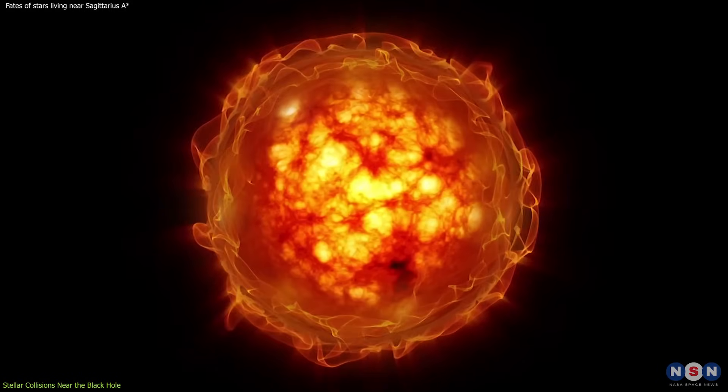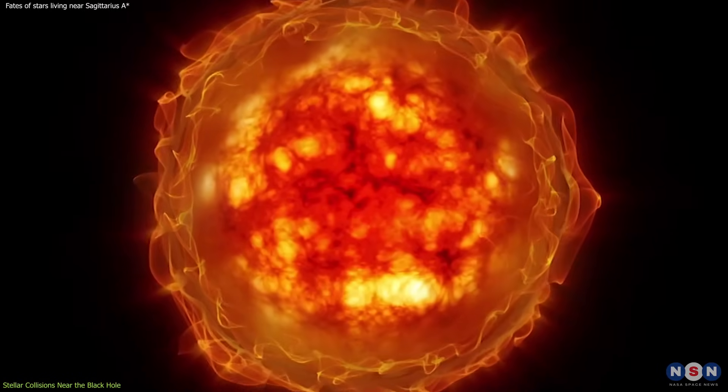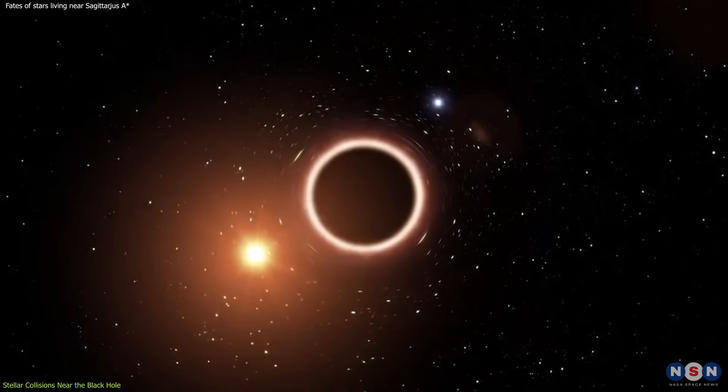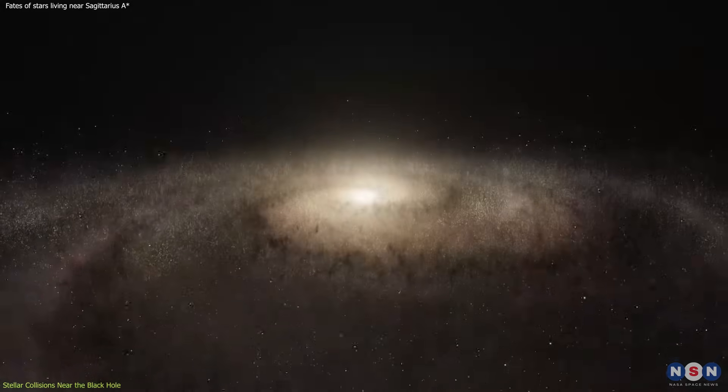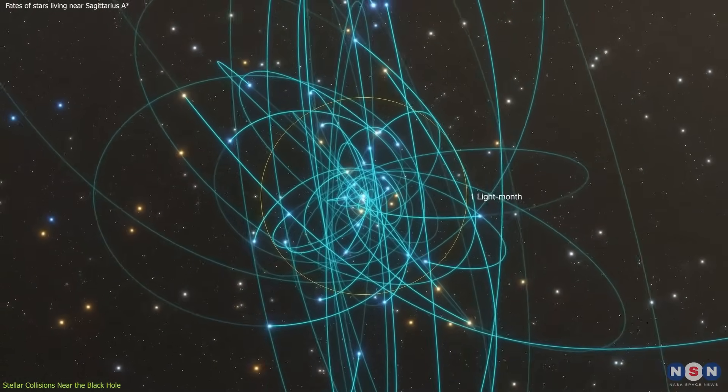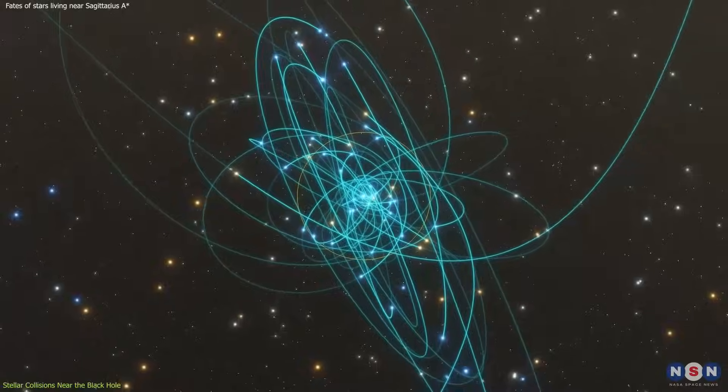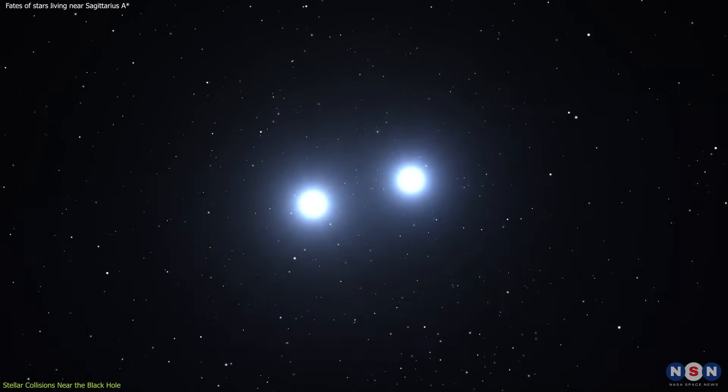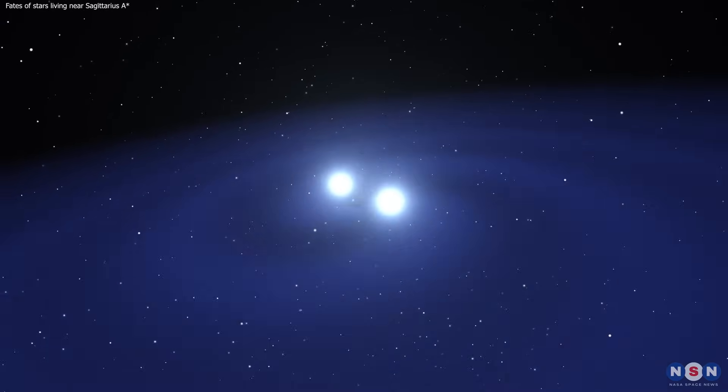These stars are like cosmic chameleons, masking their true age and origin with a youthful facade. This environment near Sagittarius A star is a testament to the chaotic and dynamic nature of our galaxy's core. The high-speed stellar ballet around the supermassive black hole is a spectacle of astrophysical extremes, showcasing the fascinating interplay between gravity, stellar evolution, and cosmic collisions.